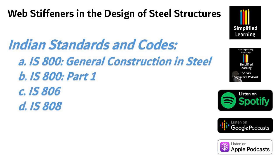IS-806 Code of Practice for Use of Steel Tubes in General Building Construction specifically addresses the use of steel tubes in construction, including provisions for web stiffeners when steel tubes are employed as structural members. IS-808 Dimensions for Hot Rolled Steel Beam, Column, Channel and Angle Section provides the dimensions and properties of various steel sections used in construction, including beams and girders that may require web stiffeners.